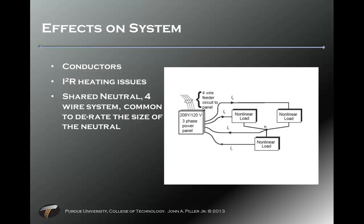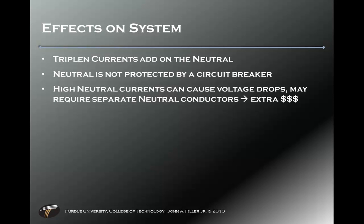Other effects are on conductors — I²R heating issues. In a four-wire system with a shared neutral, the neutral is generally derated because for a truly balanced load there should be no current flow on it. But nonlinear loads cause the potential of burning the neutral line up. Triplen currents add up on the neutral, which isn't even protected by a circuit breaker. Higher neutral currents cause voltage drops and may require separate neutrals for each conductor — and that's just more money.